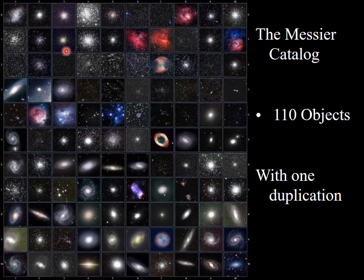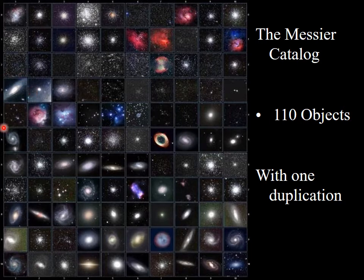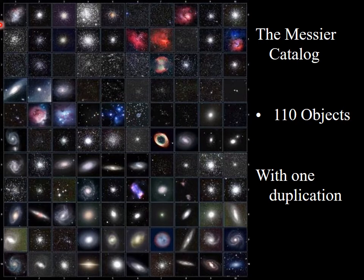Some of these objects are famous. Messier 13 — M13 — is a famous globular cluster. M57 is a cloud of gas given off when a star like the sun died. M31 is the Andromeda Galaxy, and M51 is actually a galaxy that is eating its companion galaxy.